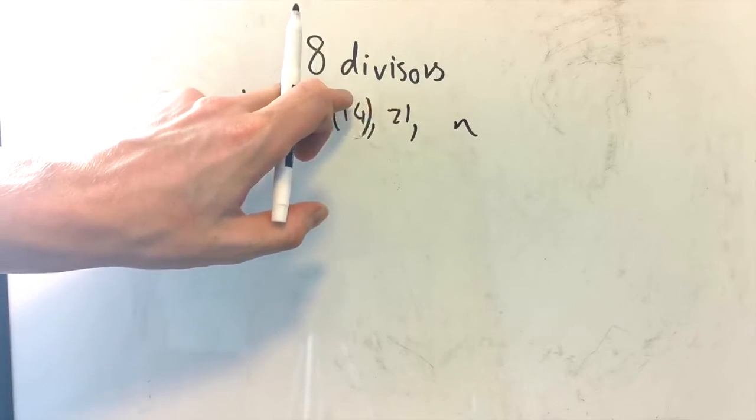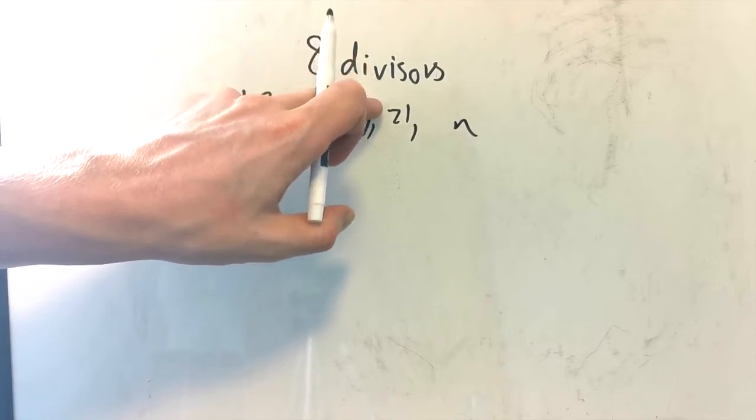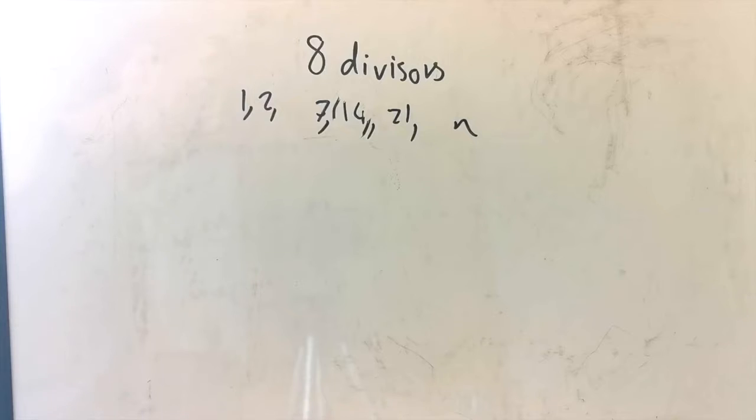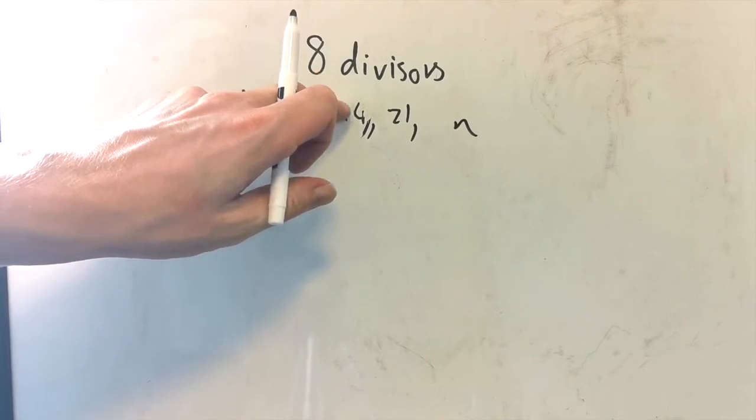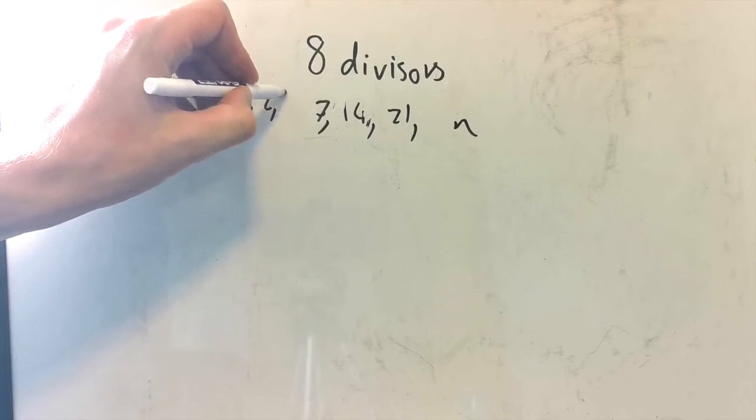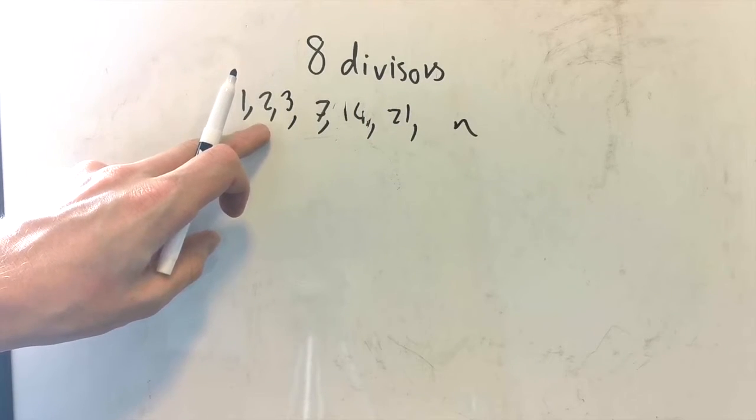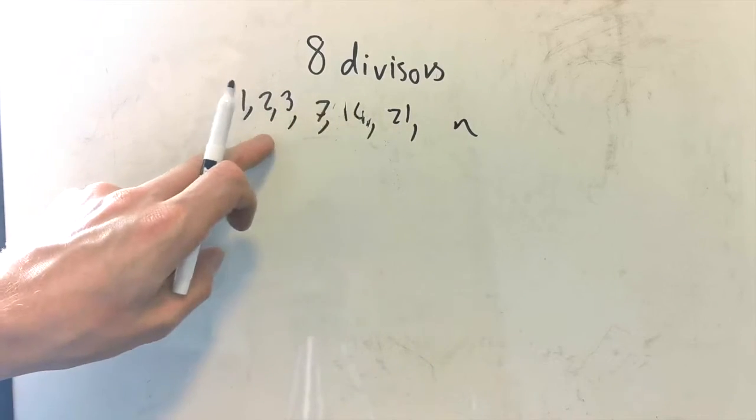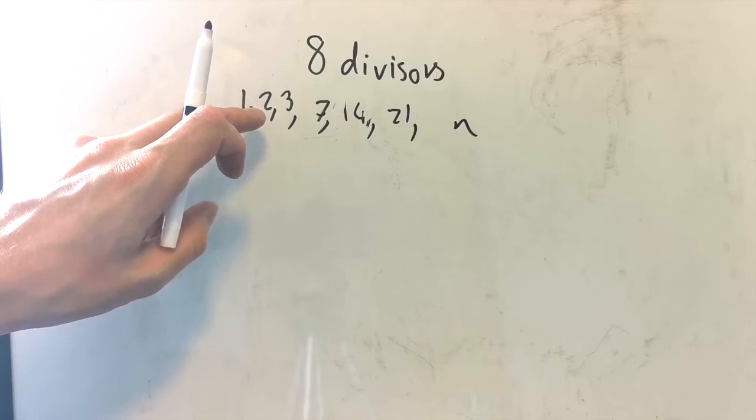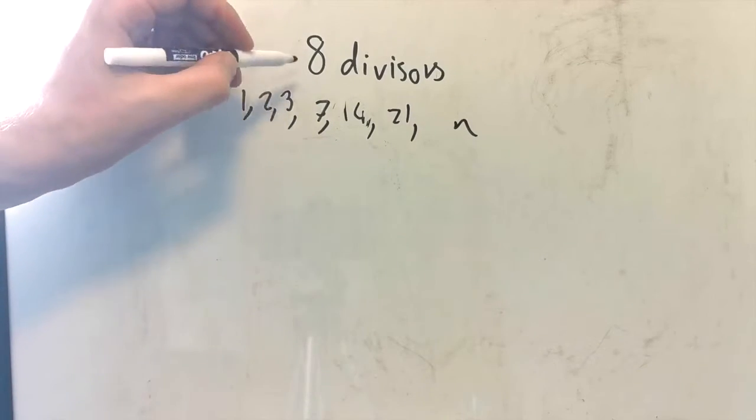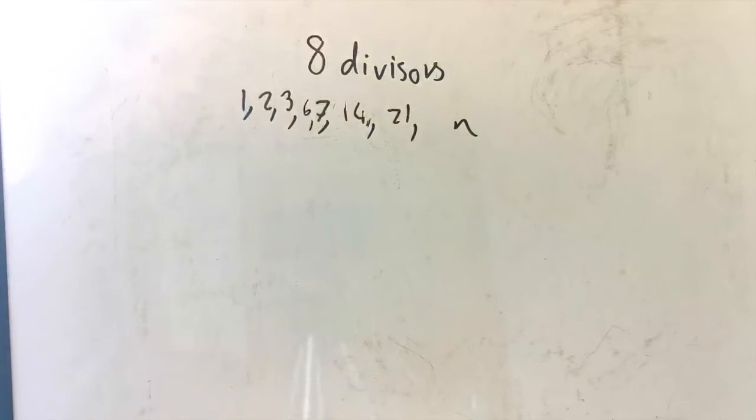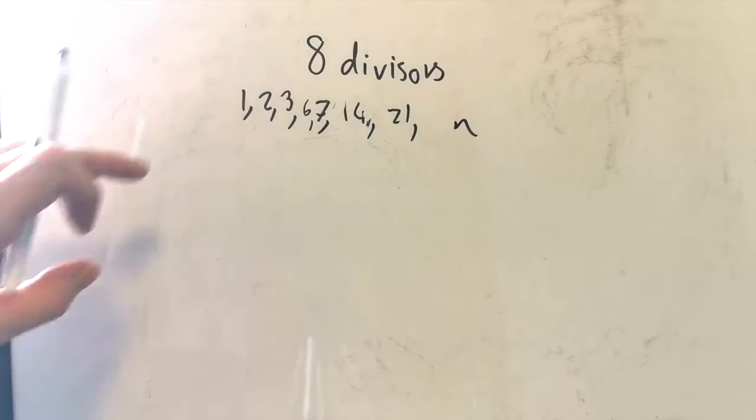Likewise, if something is in the 21 times table, it's also divisible by any of the factors of 21. These, namely, are 3 and 7. Now, we've already got 7, but we've got 3. Now, something interesting happens down this end. If something's in the 2 times table and the 3 times table, it must also be in the 6 times table. So we've got quite a lot out of that.